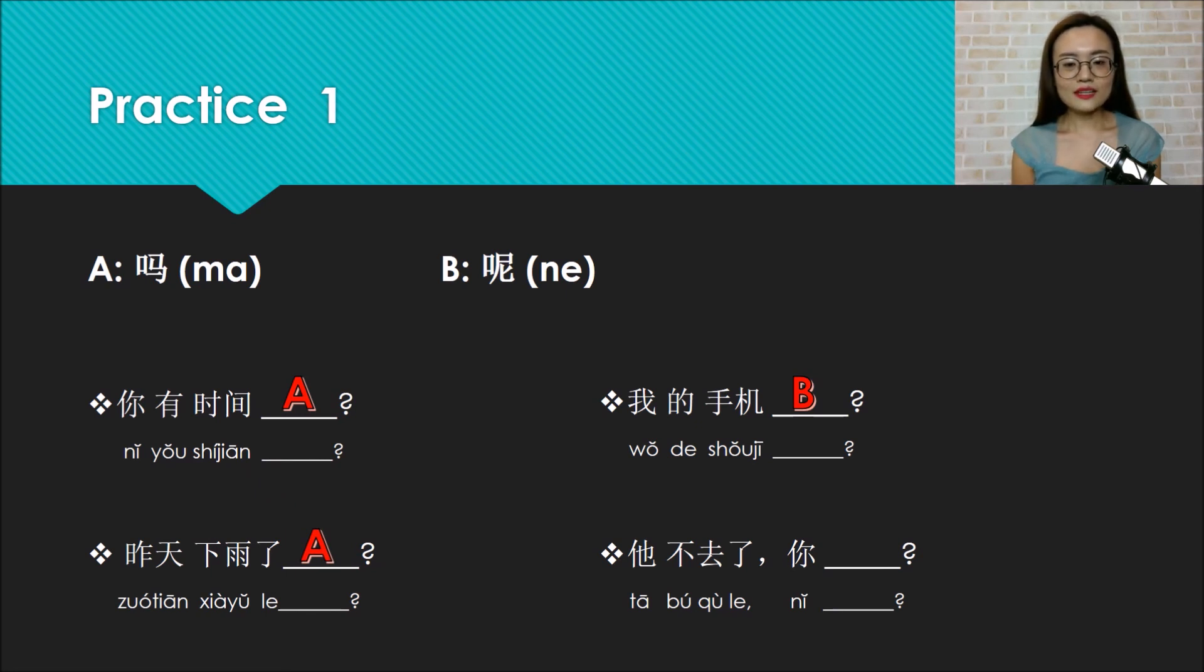Last one: Ta bu qu le, ni? He won't go there, how about you? So how to express how about? We put B (ne) here. Ta bu qu le, ni ne?